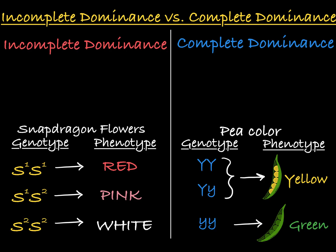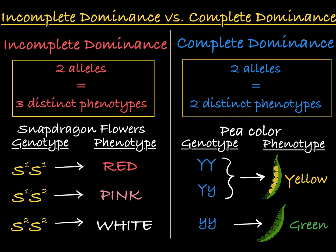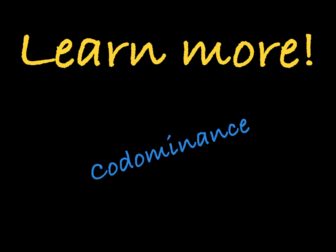So with incomplete dominance, you see two alleles creating three genotypes yielding three distinct phenotypes, with the heterozygote phenotype being an intermediate between the two homozygote phenotypes. With complete dominance, you see two alleles creating three genotypes but yielding only two distinct phenotypes. Incomplete dominance is not the only example of an inheritance pattern that strays from classical complete dominance — see my other video covering co-dominance to learn more.